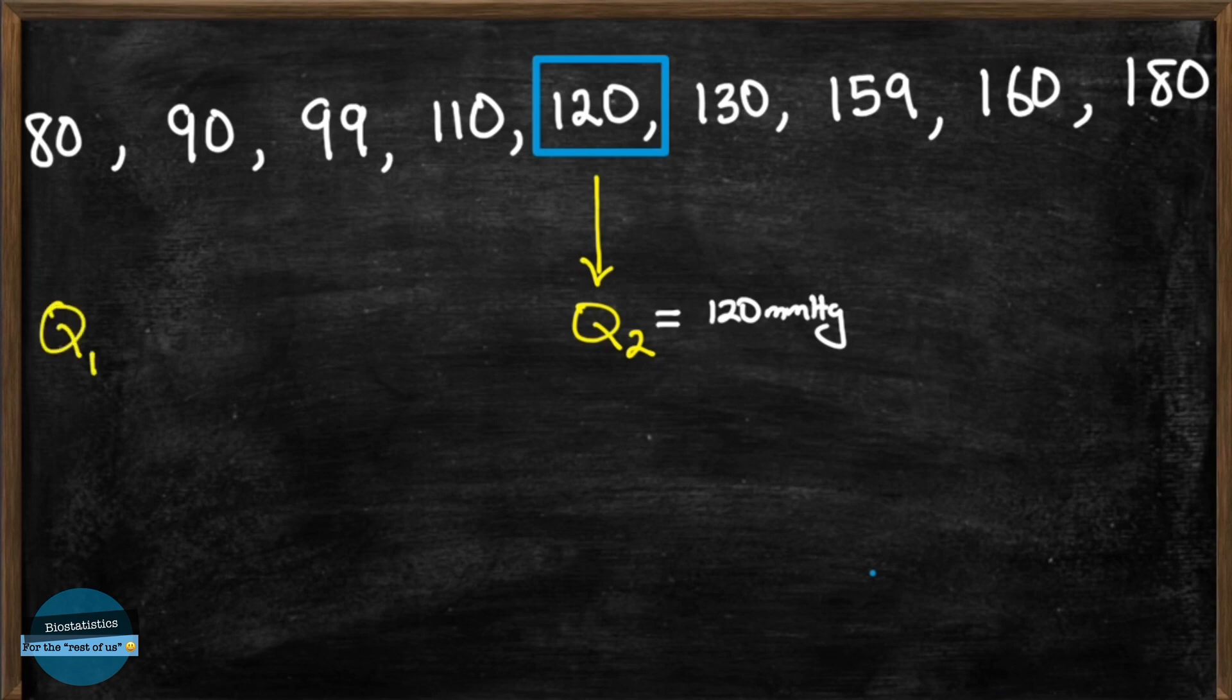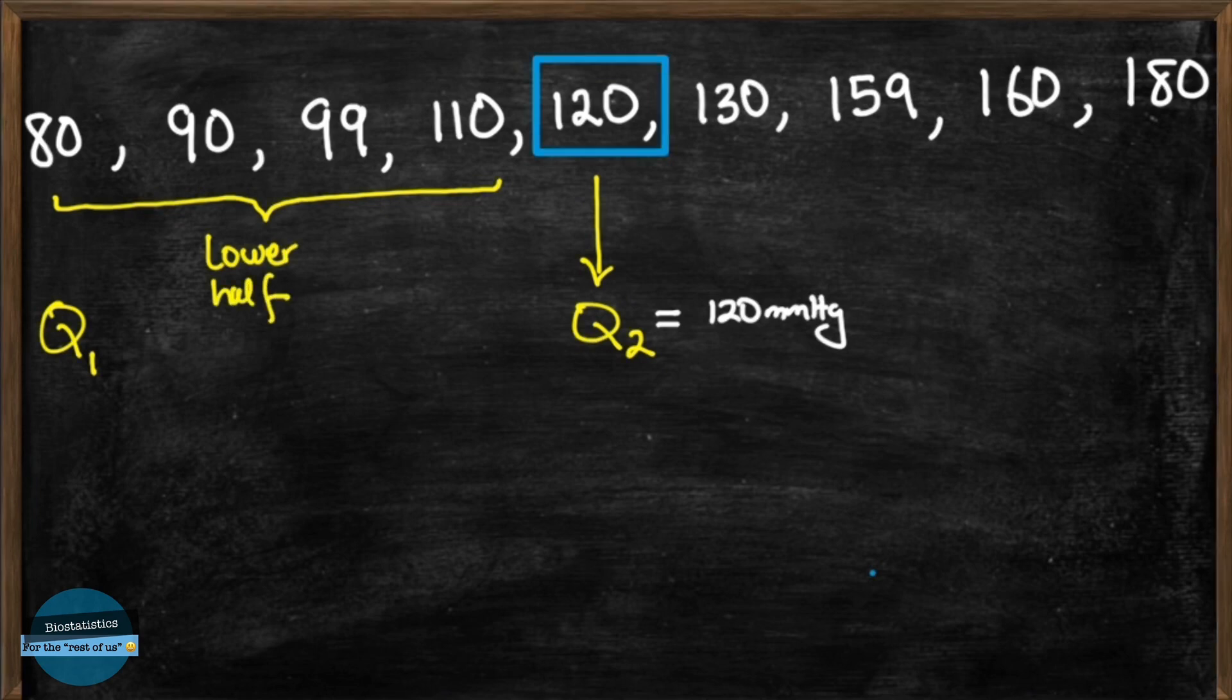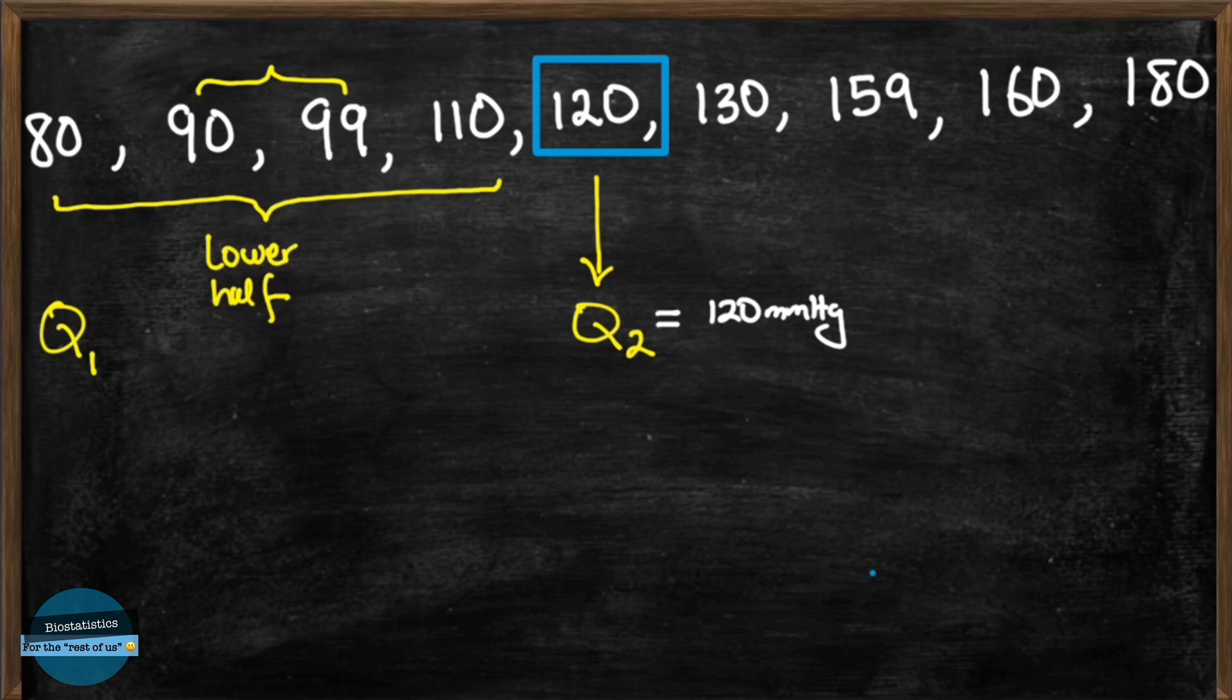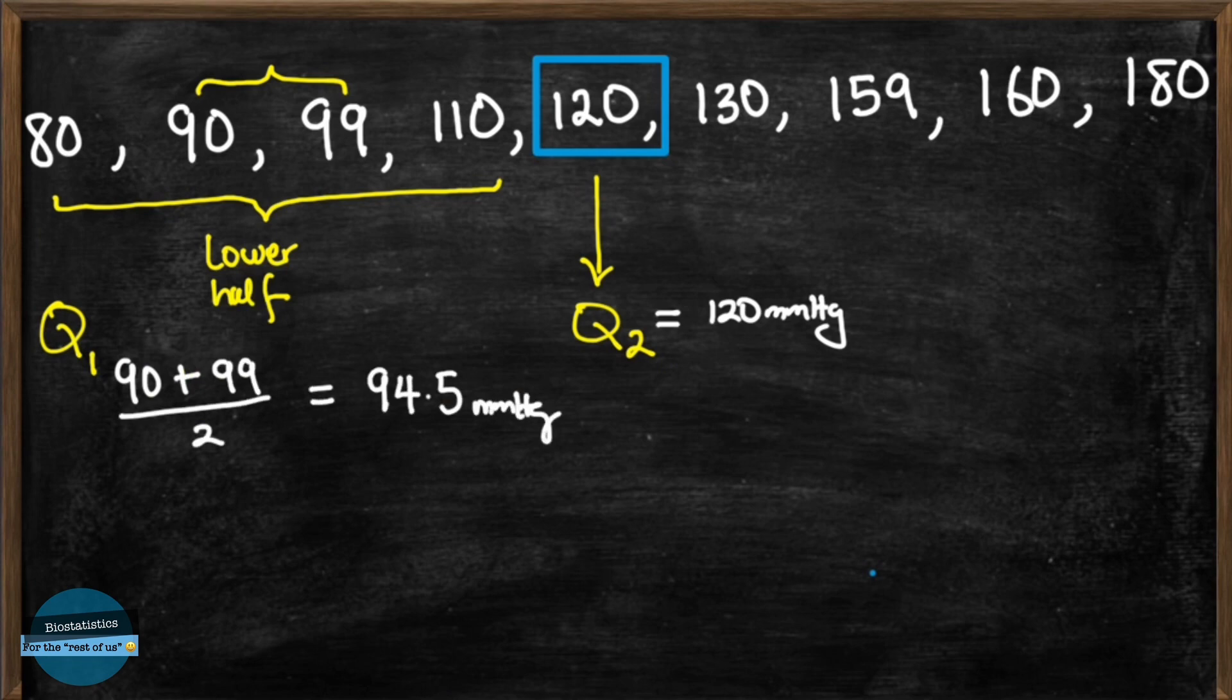Then let's find our first quartile, Q1. Remember, Q1 is the median of the lower half of the data set. And the lower half consists of four observations: 80, 90, 99 and 110. Now since we have an even number of observations, we'll need to find the average of the middle two numbers in the lower half. The middle two numbers are 90 and 99. So the average of 90 and 99 is 90 plus 99 divided by 2. That will give us 94.5. So our Q1 is 94.5 millimeters of mercury.